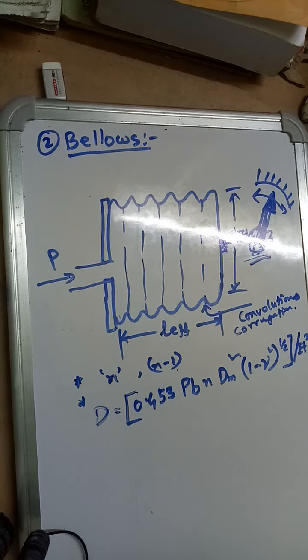Small n is the number of semi-circular corrugations, t equals thickness of the wall, d_m equals mean diameter, capital E equals modulus of elasticity, and ν equals Poisson's ratio.